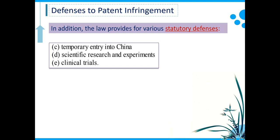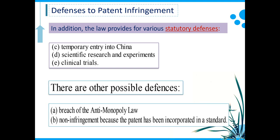Number four: scientific research and experiments, not for commercial purposes. The use of the patented invention could be legitimate on this ground. Number five: clinical trials. There could be other possible defenses, but not within the scope of statutory defenses, which cannot be considered as statutory limitations or exceptions to the exclusive rights granted to the patent owner. In these cases, for instance, breach of anti-monopoly law, or non-infringement because the patent has been incorporated in a standard.